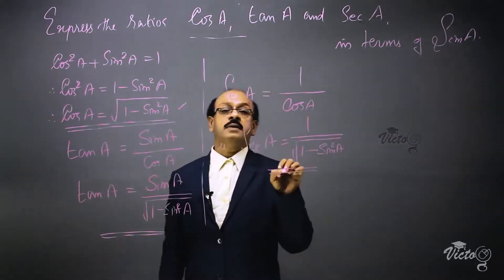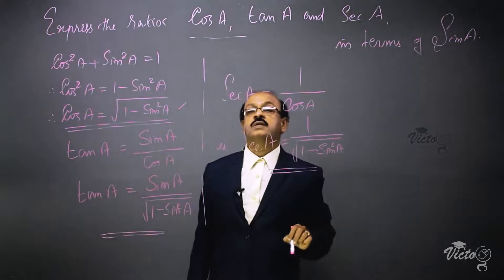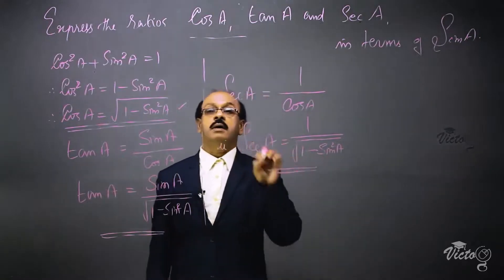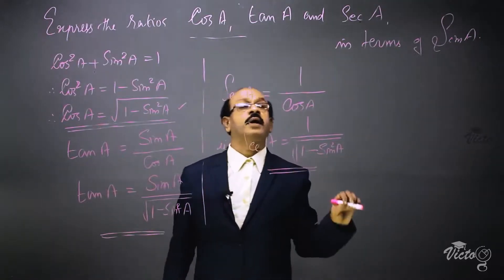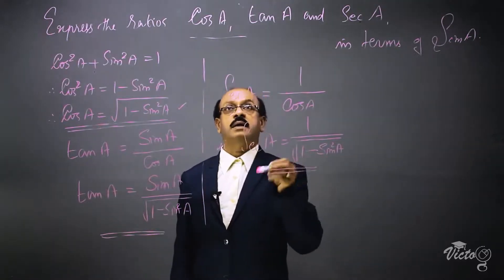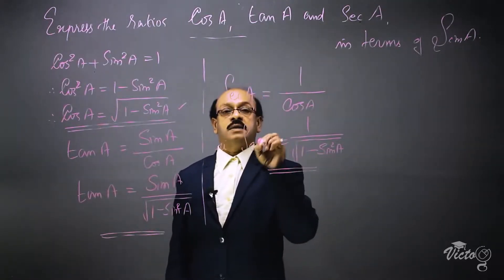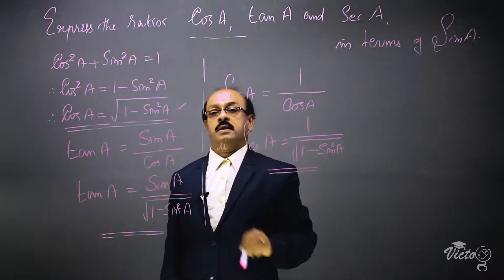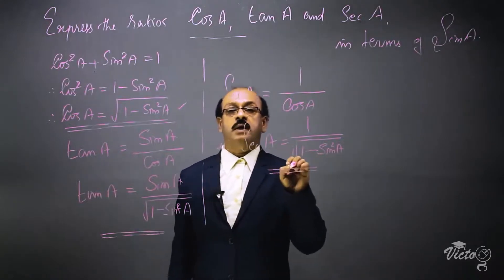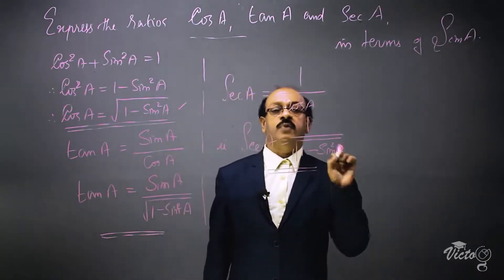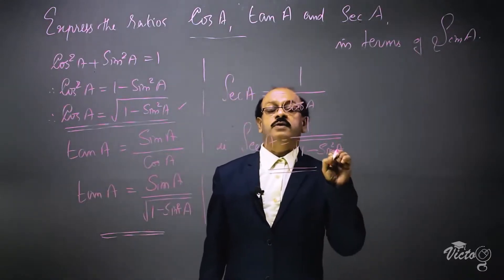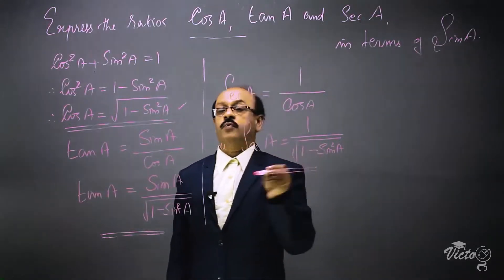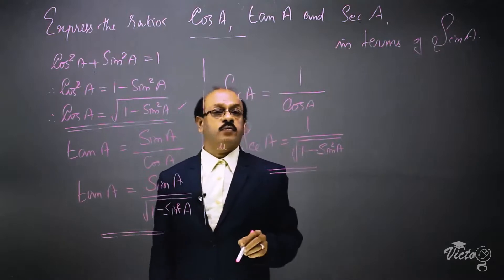For this type of question, we have to study all the connecting ratios between sin and cos, sec and tan, cosec and cot, etc. We have to study the identities very well — then it will be much easier to solve this type of question.